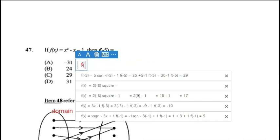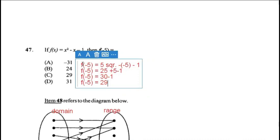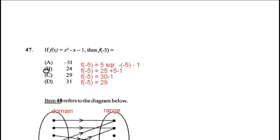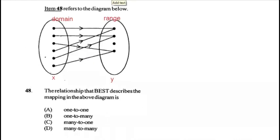Question 47: if f(x) = x² − x − 1, then f(−5) is — wherever we see x we replace it with −5. x² = (−5)² = 25; the minus from the equation and the negative from −5 give a positive, so it's 25 + 5 − 1 = 30 − 1 = 29. Answer for 47 is C.